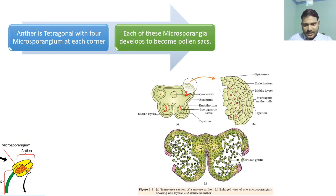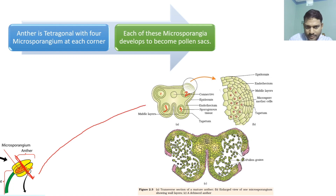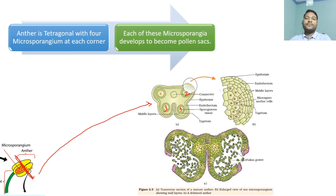When I take a cross section of the anther, focusing on the top left, I get this particular structure under the microscope. Each of these microsporangia will develop into the pollen sac, which will contain thousands of pollen grains.